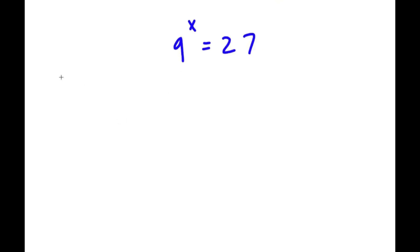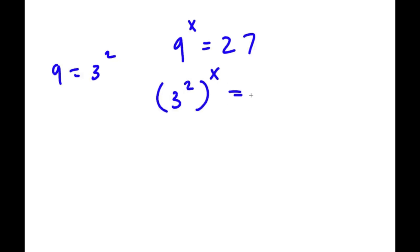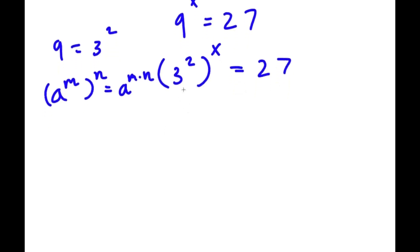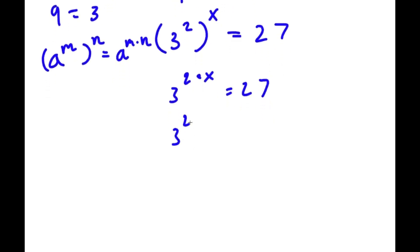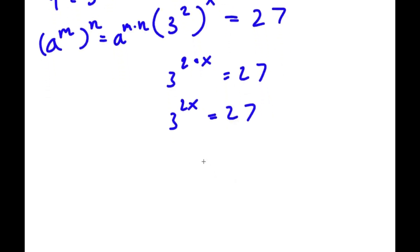9 is the same thing as 3 squared. So 9 to the power of x is going to equal 3 squared to the power of x, which is equal to 27. And if I have something in the form a to the power of m to the power of n, this is equal to a to the power of m times n. So 3 to the power of 2 to the power of x will equal 3 to the power of 2x. So I have 3 to the power of 2x is equal to 27.